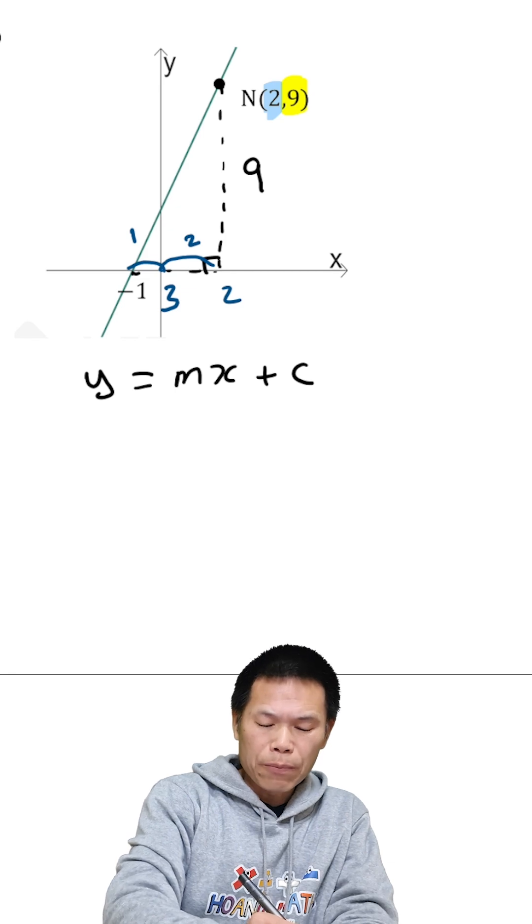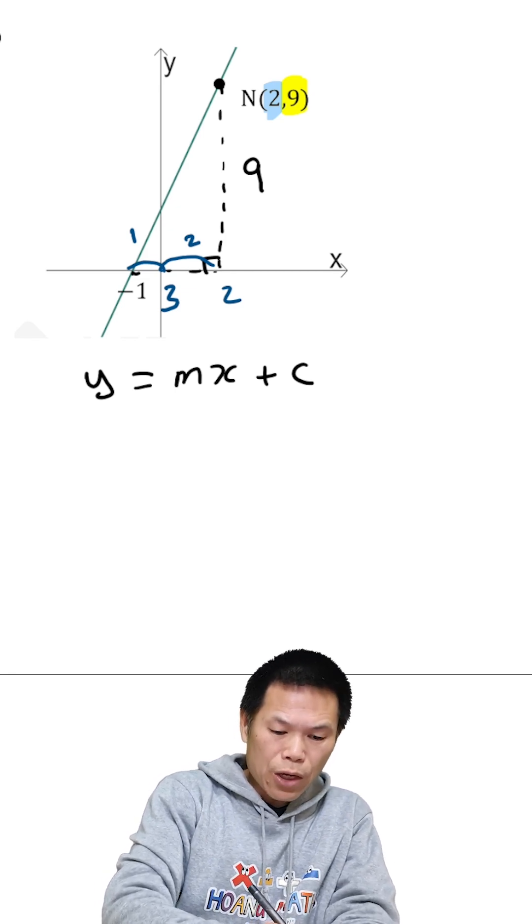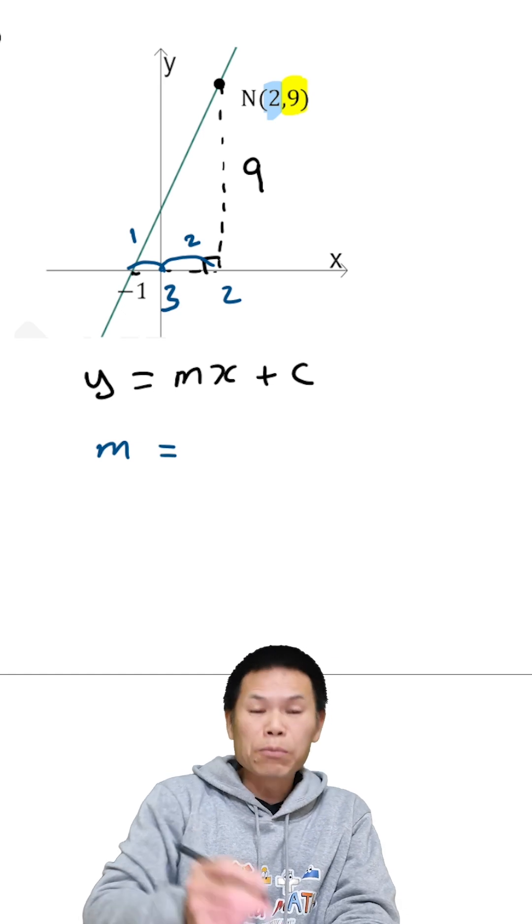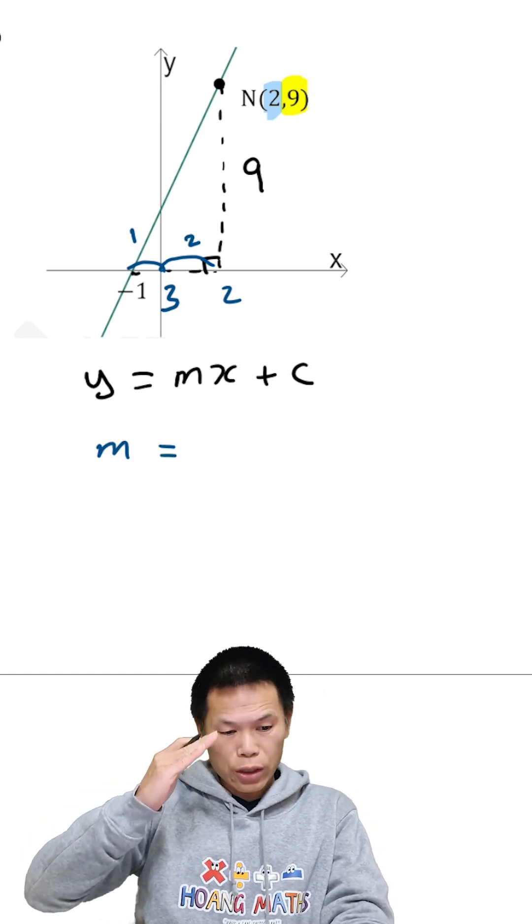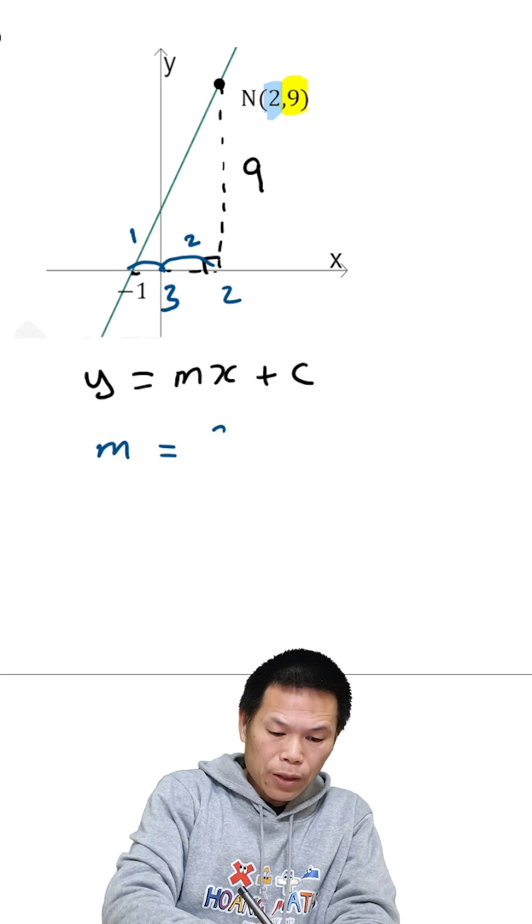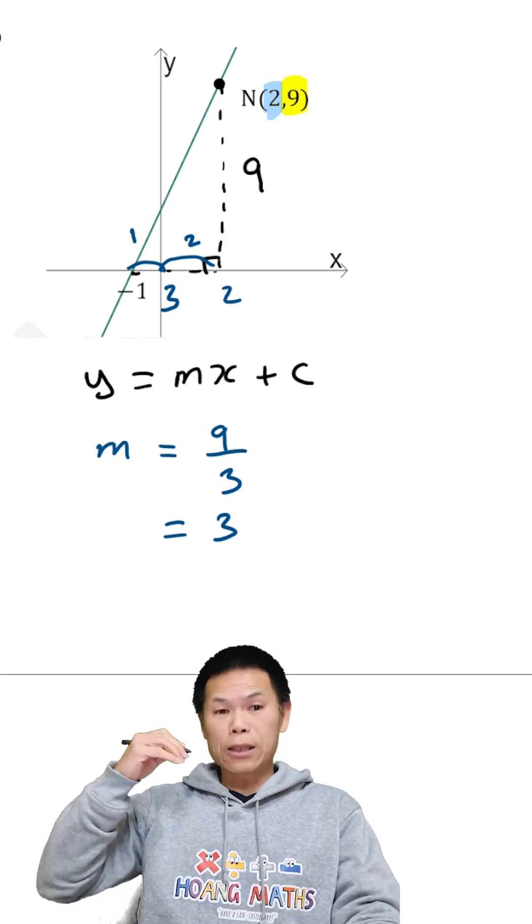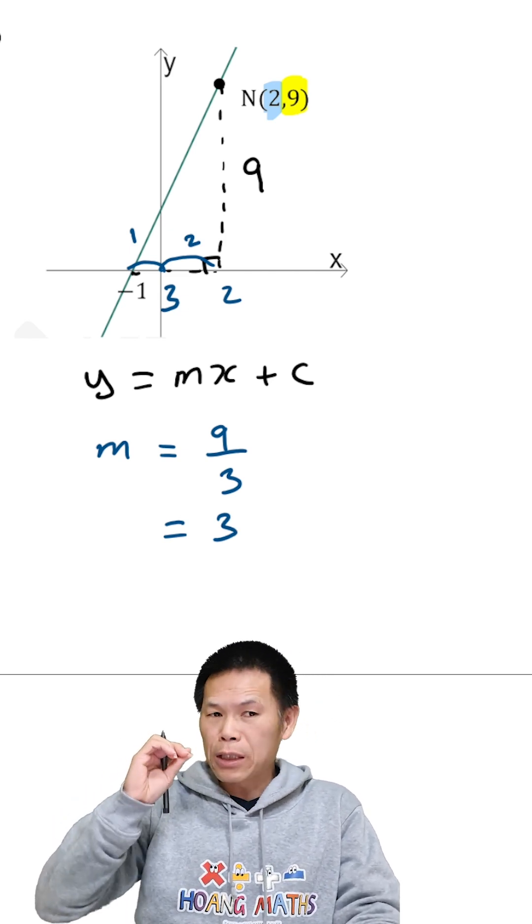So let me just write down here. So the gradient is, because it's heading this way, so it's positive gradient. So that means rise is 9, run is 3. So 9 divided by 3 is 3. So the gradient is 3. In another word, m is 3.